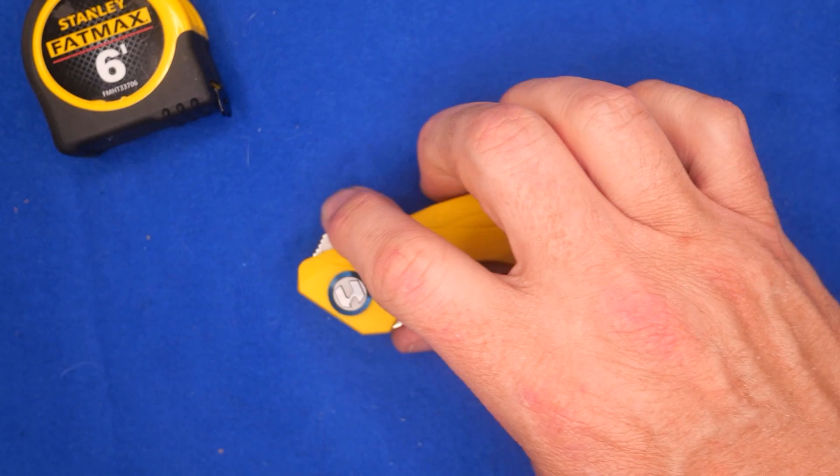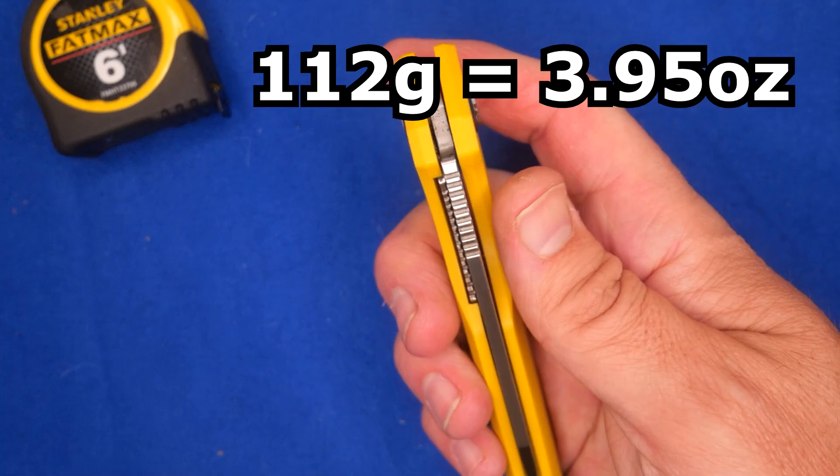The weight: 112 grams, 3.95 ounces. Under 4 ounces for a full-size knife? Not bad at all.